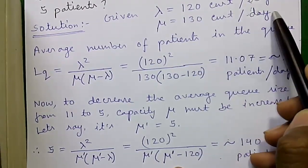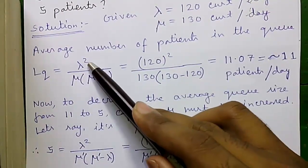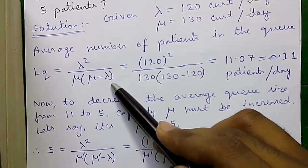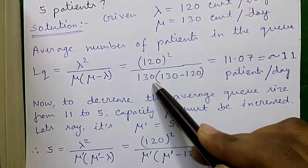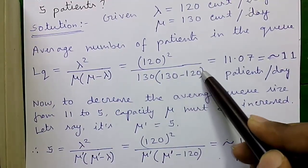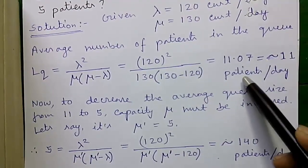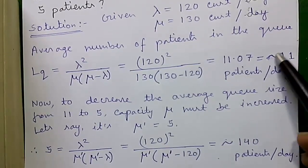Average number of patients in the queue is given by LQ equals to lambda square divided by mu into mu minus lambda. That's equals to 120 whole square divided by 130 into 130 minus 120, so that's equals to 11.07 or roughly equals to 11 patients per day. That means 11 patients are in the queue per day.